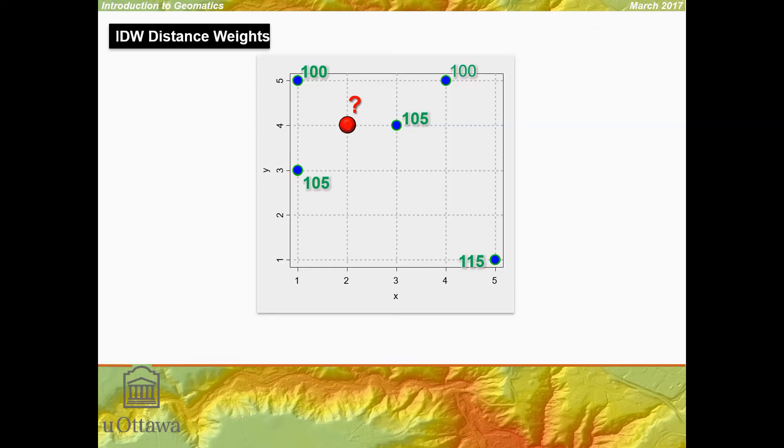Let's look at an actual worked example of inverse distance weighted interpolation. We want to estimate or interpolate the value right here, where we see the red dot and the question mark. What value should that be?